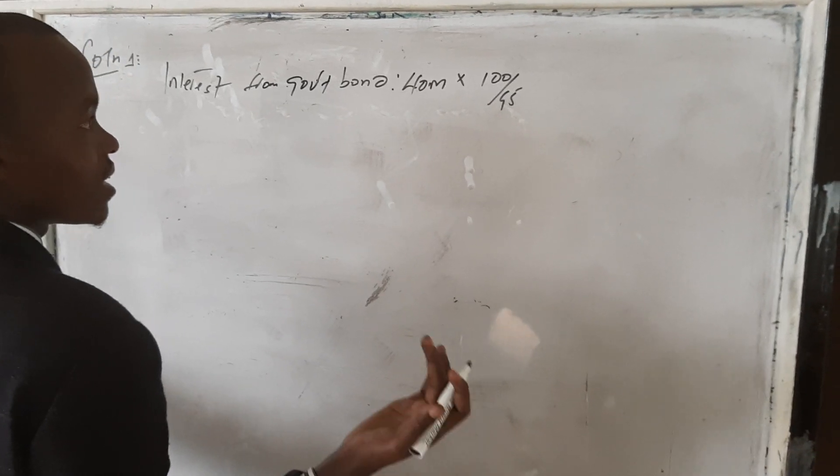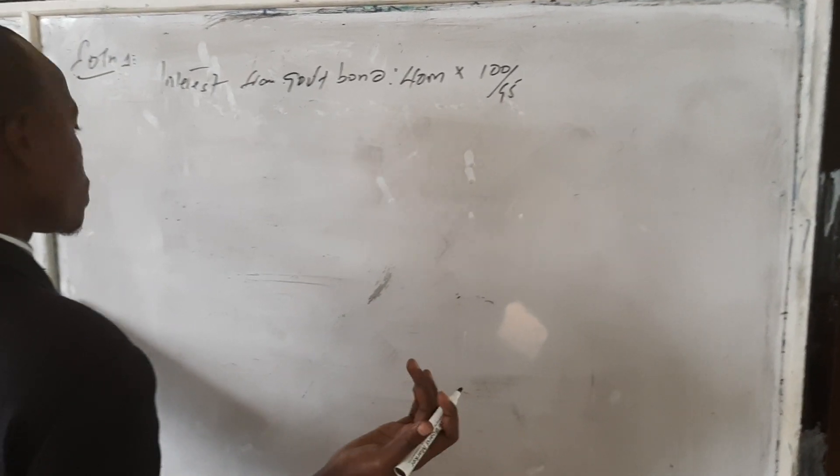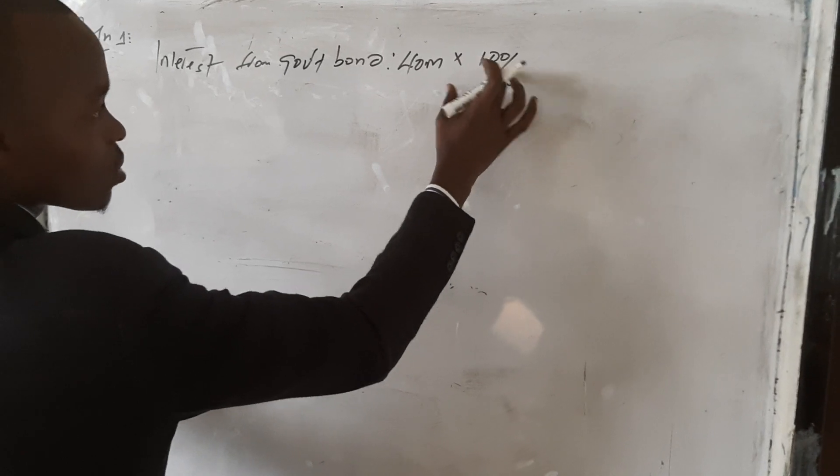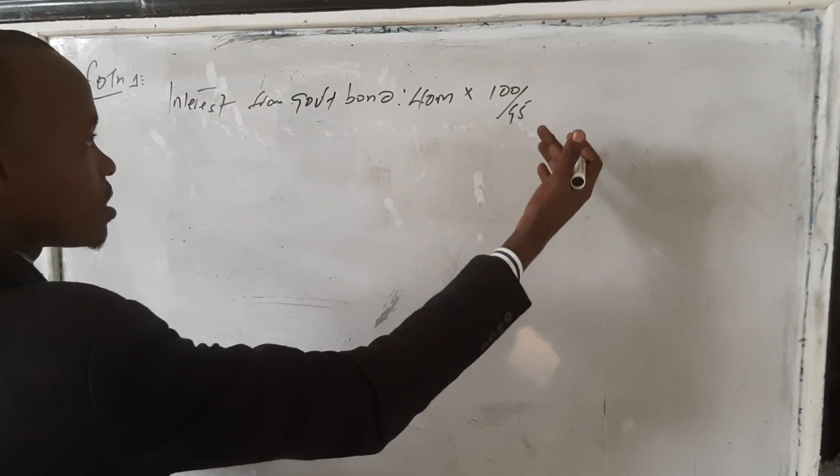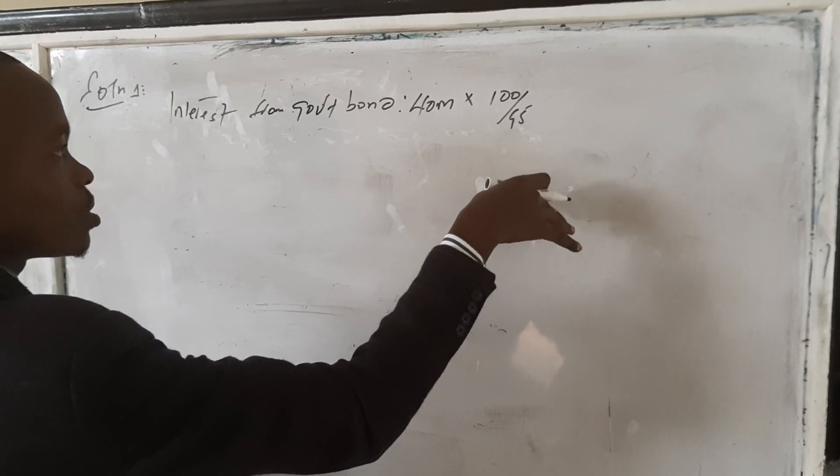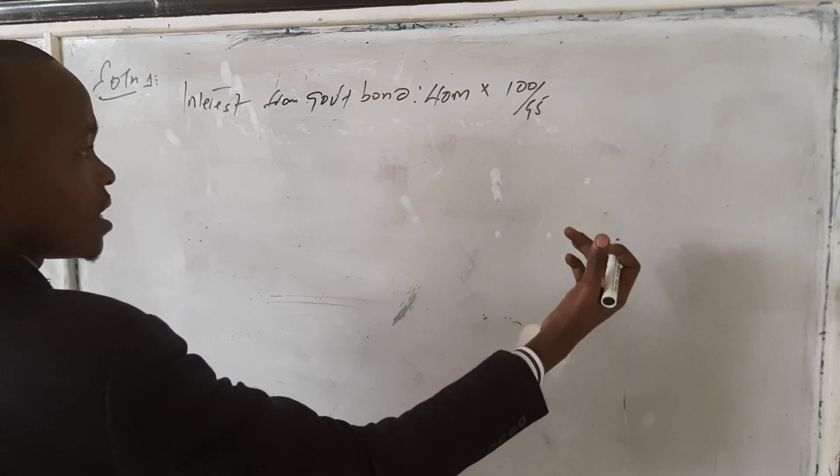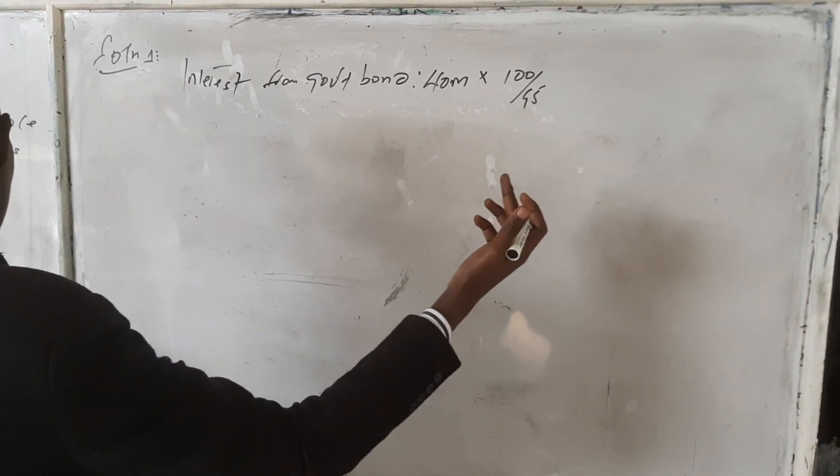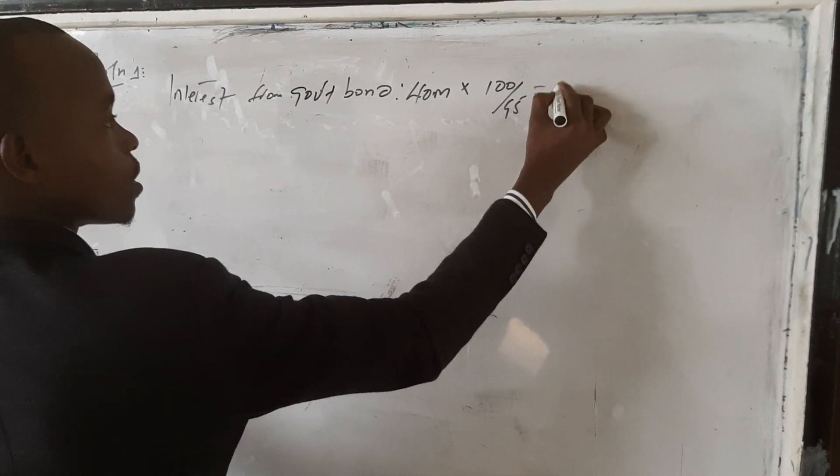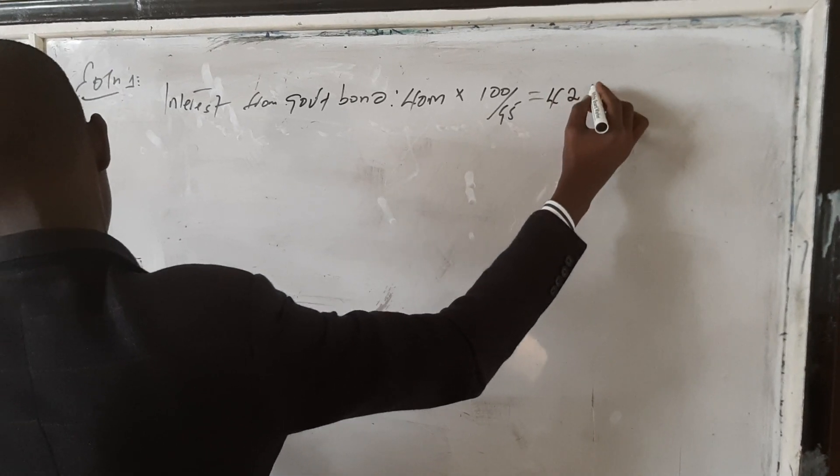When it is a final tax, we need to gross this tax. By grossing it, we take 100 over 95, so that after grossing, when we tax it, it won't be double taxing. That's why we need to gross it, and you get 42,126,316.